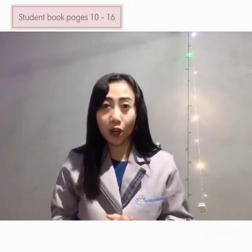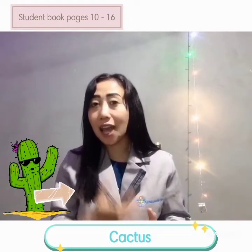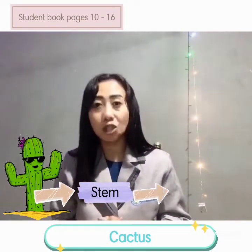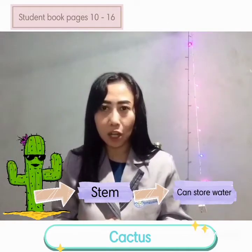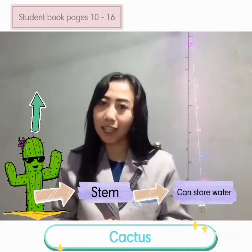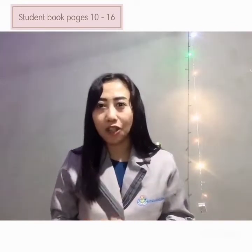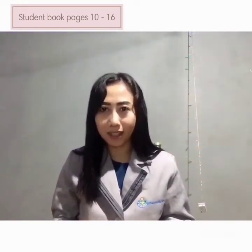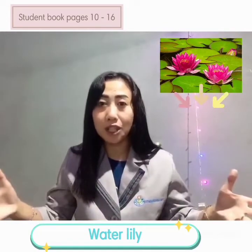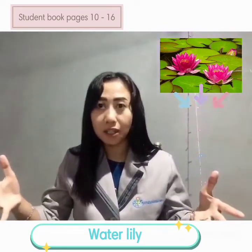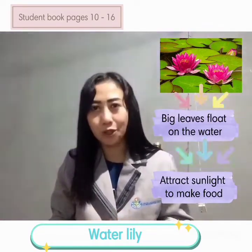Number two, or the second, is cactus. Cactus have stems that can store the water and have spine-shaped leaves that can stop the water loss. Number three, or the third one, is water lilies. Water lilies have big leaves that float on the water, that can attract the sunlight to make food.